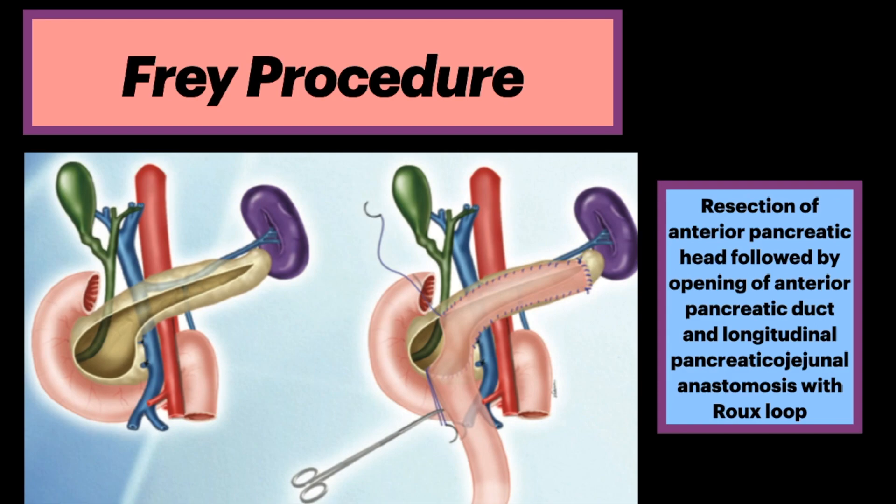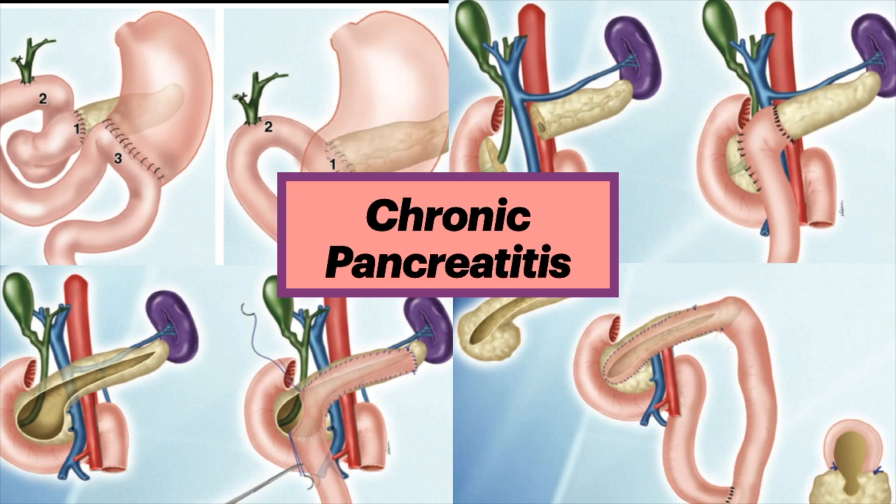The drawing on the left shows that initially the main pancreatic duct is exposed and the head is excavated, preserving a rim of pancreatic tissue and the biliary duct. The right drawing shows the next step: a longitudinal side-to-side pancreaticojejunostomy. Hope you enjoyed this overview of surgical treatment for chronic pancreatitis.